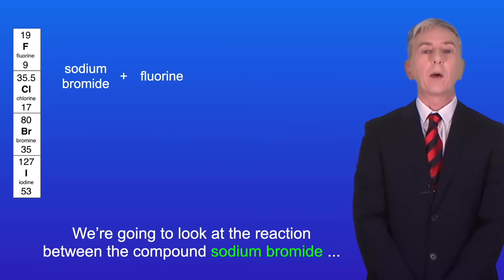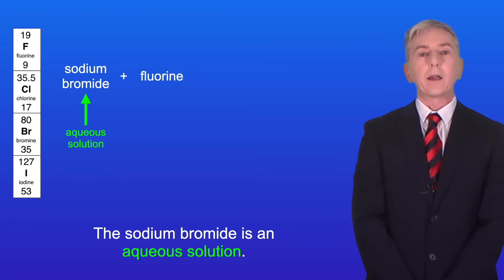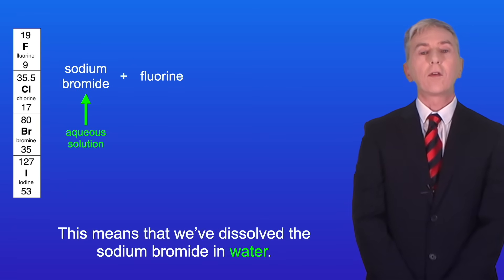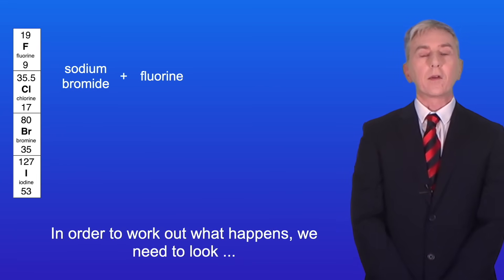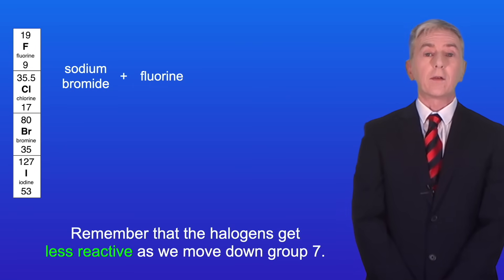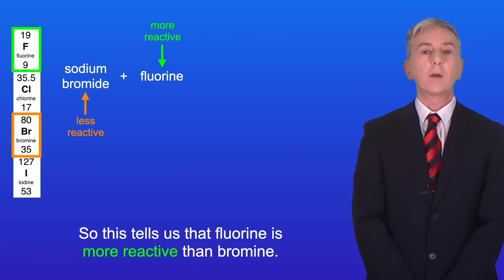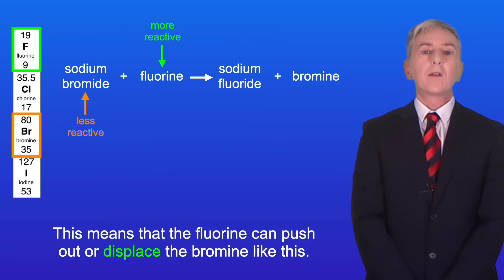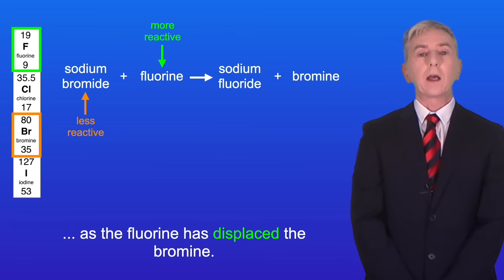We're going to look at the reaction between the compound sodium bromide and the element fluorine. The sodium bromide is an aqueous solution, meaning we've dissolved the sodium bromide in water. To work out what happens, we need to look at the reactivity of the halogens involved. Fluorine is higher than bromine in Group 7, so fluorine is more reactive than bromine. This means that the fluorine can push out or displace the bromine — scientists call this a displacement reaction.